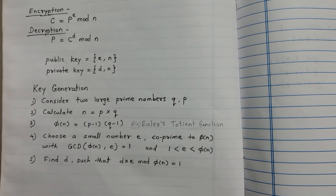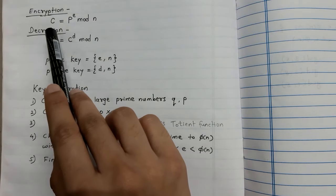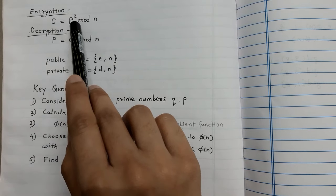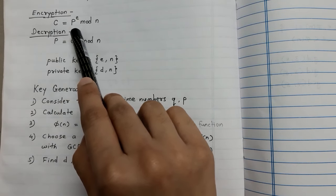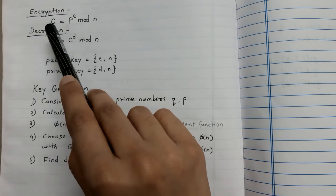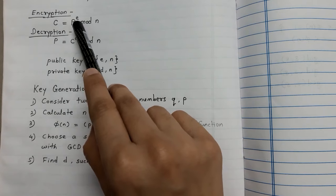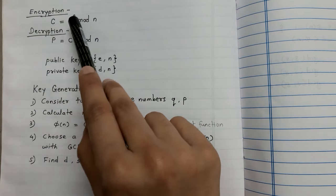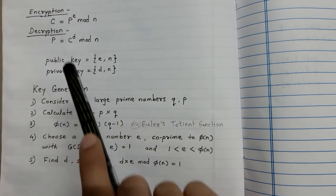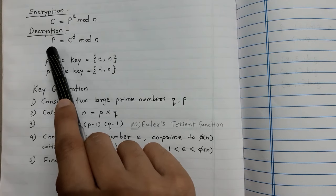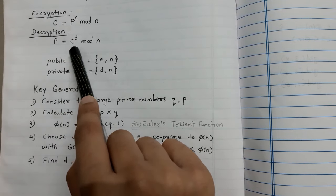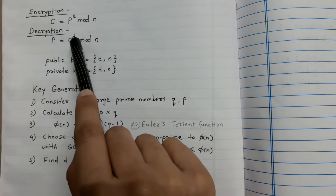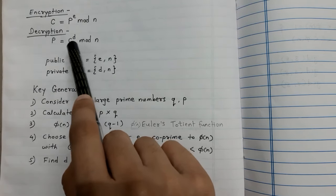Now let us see the formula for encryption and decryption using RSA algorithm. The encryption formula is C = P^E mod N, where C is the ciphertext and P is the plaintext message. The public key is E. For decryption, the formula is P = C^D mod N, where P is the plaintext and C is the ciphertext. D is the private key.